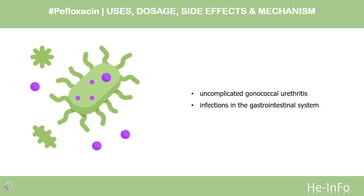What is Pafloxacin used for? It is used for the treatment of uncomplicated gonococcal urethritis in males, and for gram-negative bacterial infections in the gastrointestinal system and the genitourinary tract.